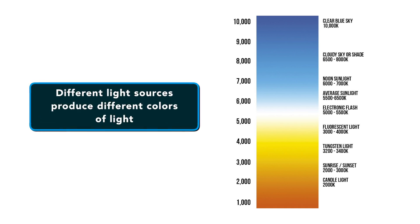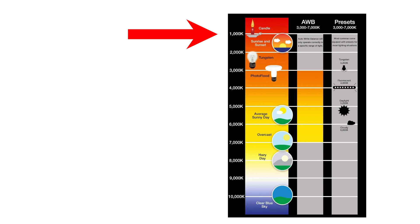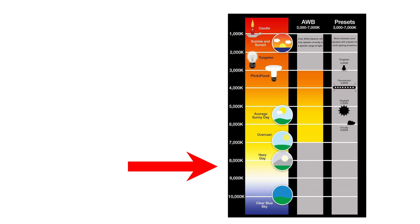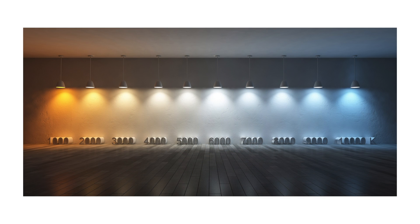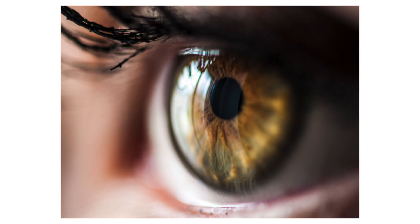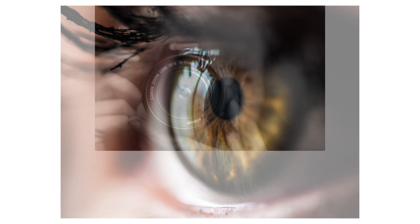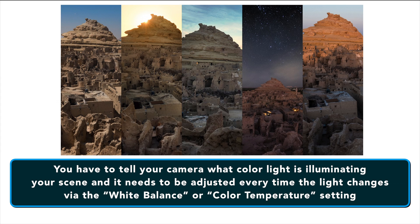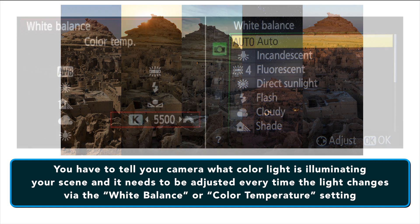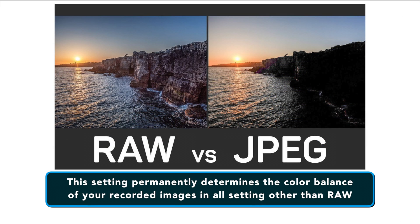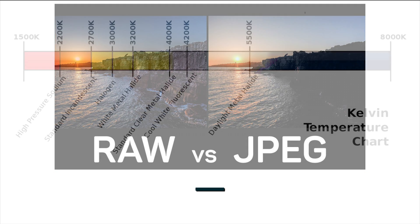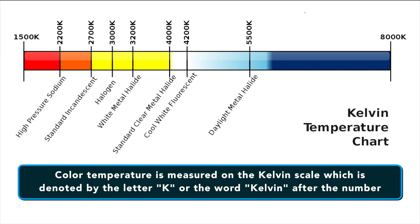In layman's terms, different light sources produce different colors of light. For example, a candle emits a reddish light while the midday Sun's rays have a blue tint. These different colors can be expressed using a number known as the color temperature of the light. While our eyes and brains adjust continually to changing light conditions, a camera will not. You have to tell your camera what color light is illuminating your scene and it needs to be adjusted every time the light changes, like when you go from inside to outside. This is your white balance or color temperature setting, and if you're shooting anything other than raw, this setting permanently determines the color balance of your recorded images. Color temperature is measured on the Kelvin scale, denoted by the letter K or the word Kelvin after the number.